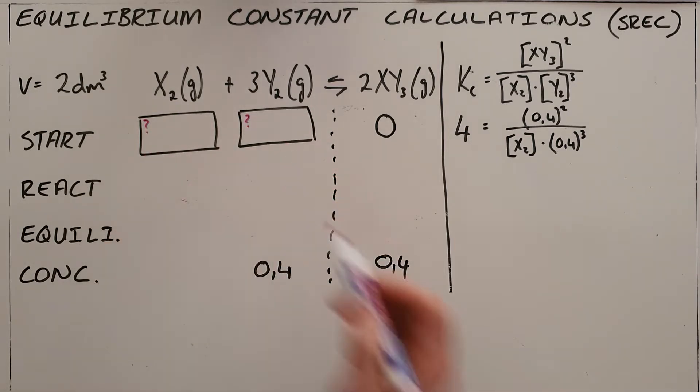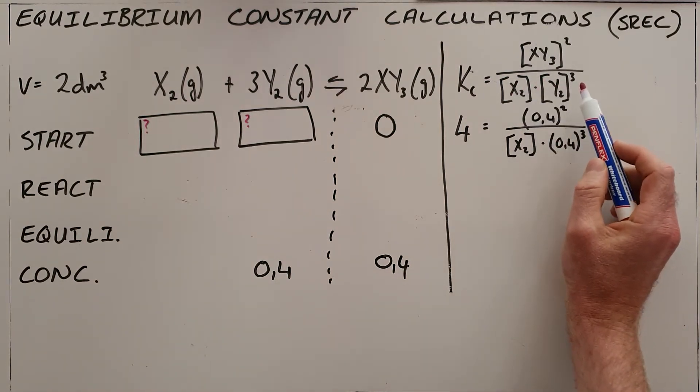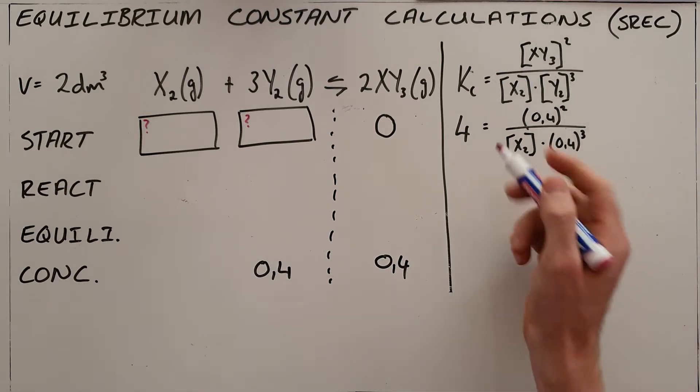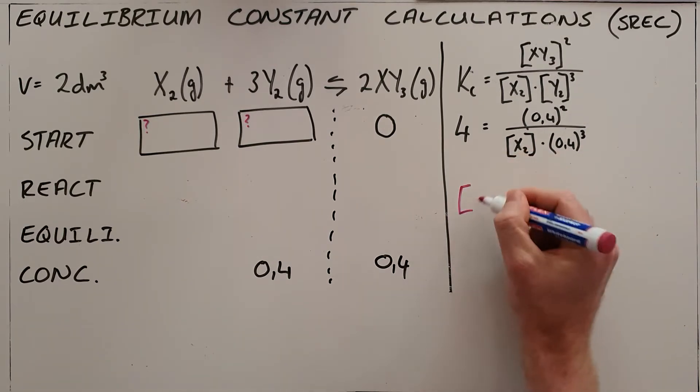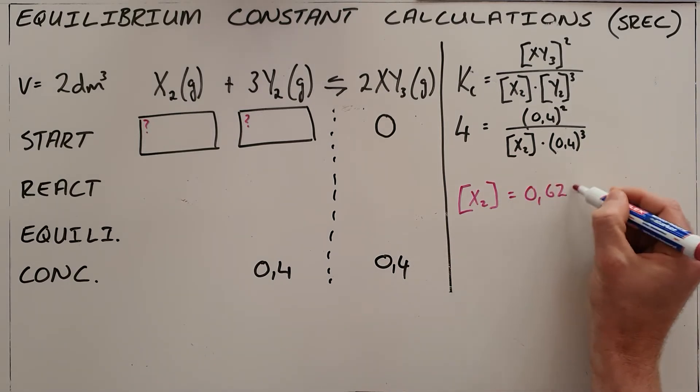We are asked to find what these two unknown amounts that we started with are. We start doing that by using our equilibrium constant formula to find that the concentration at equilibrium of x2 is 0.625.